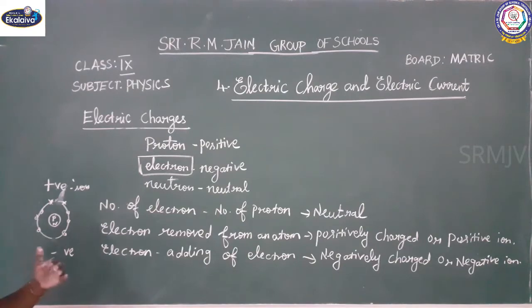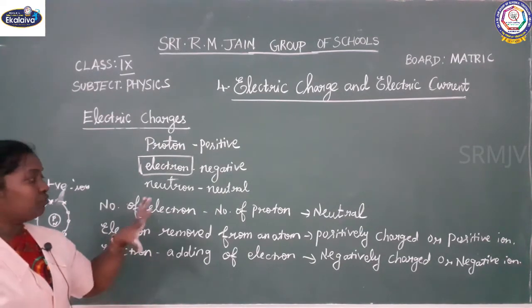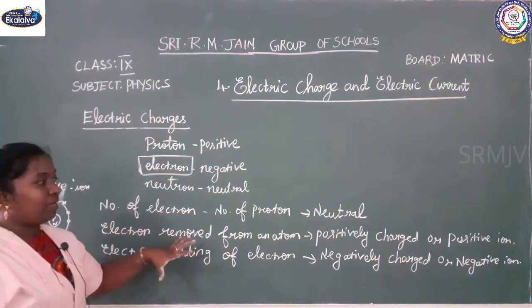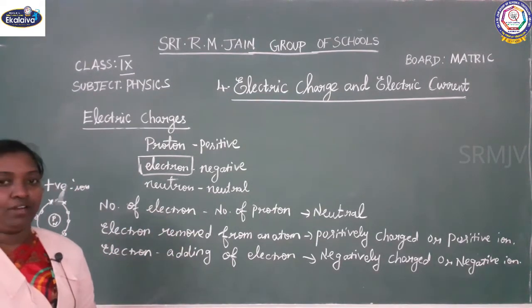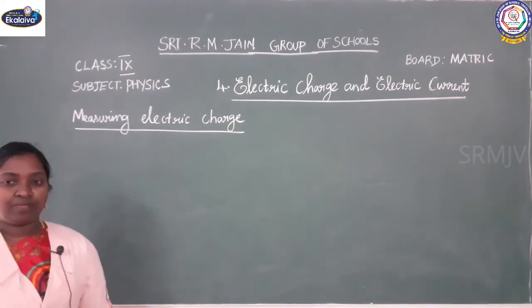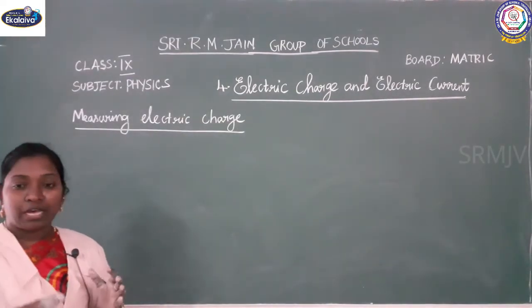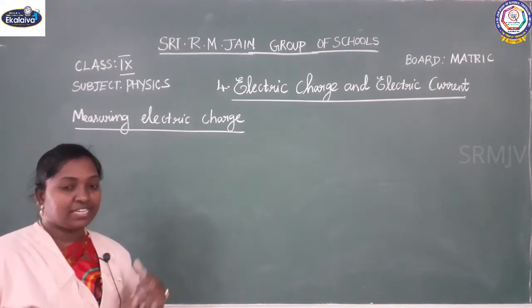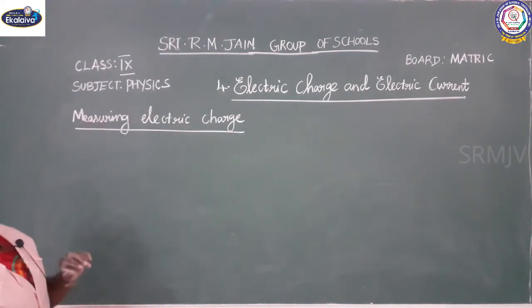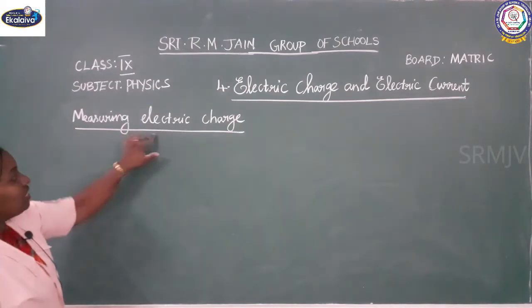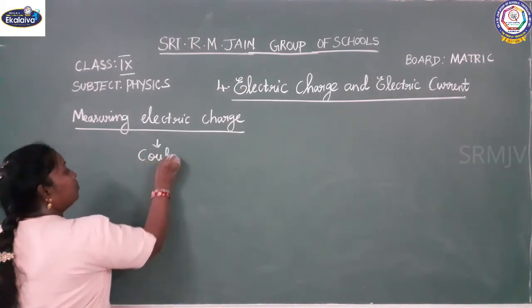So based on the electron: when the number of electrons is removed, the atom becomes a positive ion; when the number of electrons is added, it becomes a negative ion. We've seen how the atom becomes positive, negative, or neutral. Now, how do we measure the electric charge? The electric charge can be measured by the coulomb.